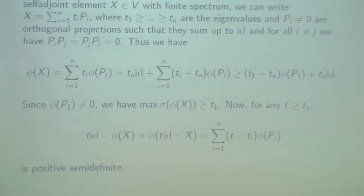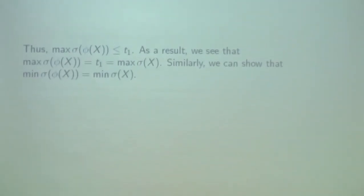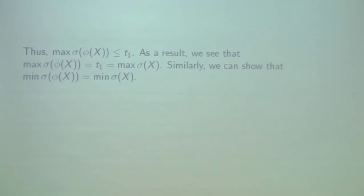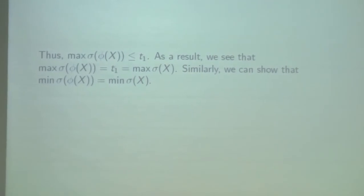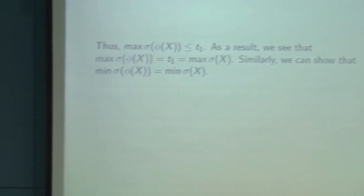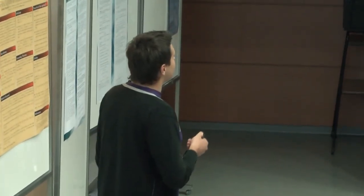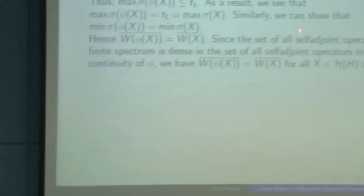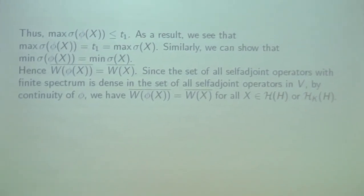If we take T greater than or equal to t sub 1, then the identity minus phi of X is positive semi-definite. Thus, collecting this whole information, we can see that the maximum of sigma of phi of X equals the maximum of sigma of X. Using a similar argument, we can show that the minimum of sigma of phi of X equals the minimum of sigma of X. Recall that for a self-adjoint operator, the classical numerical range is the convex hull of the spectrum, so in this case we get the same closed intervals.